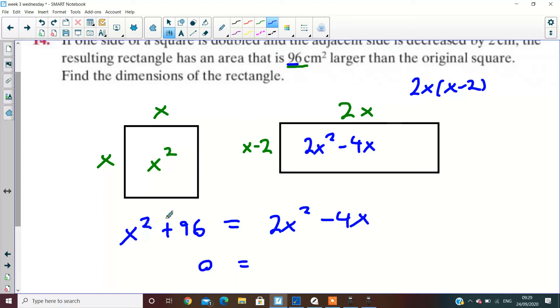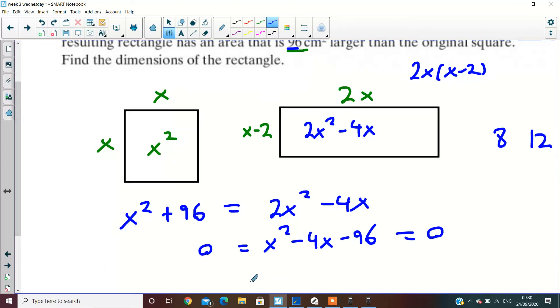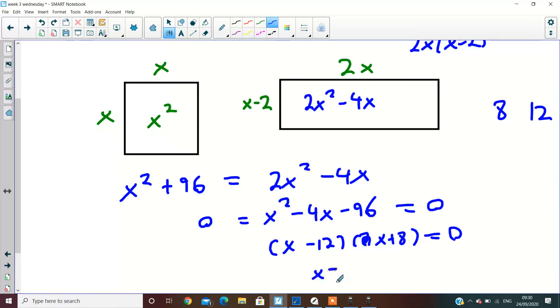So 0 on this side, x squared minus 4x minus 96. I think it's 8 and 12 is what you're looking for there. One answer is illegal, you've got to tell me which answer it is. I got x equals 12 and x equals minus 8. Which answer is not allowed?